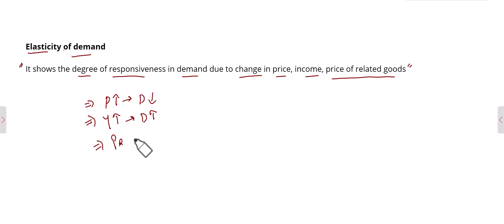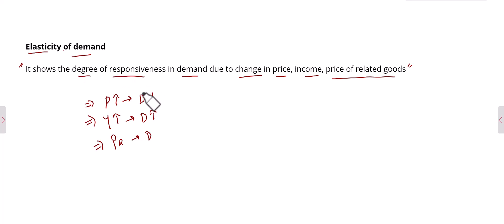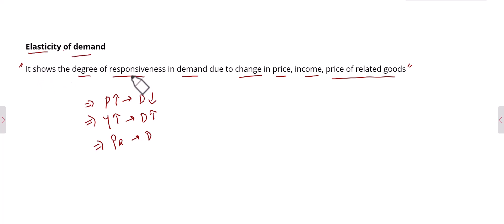When the price of related goods changes, demand for goods also changes. So there are different types of elasticity of demand. In today's lecture we are only discussing what is meant by elasticity of demand — basically, it shows the degree of responsiveness in demand due to change in price, income, or price of related goods.